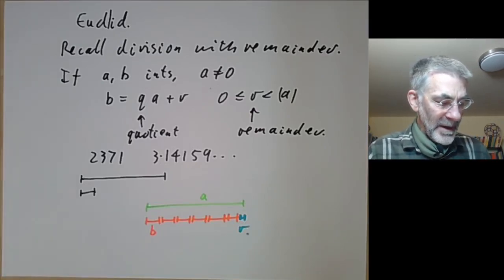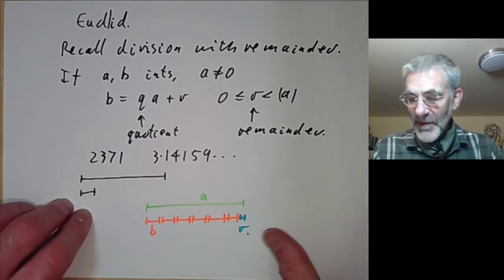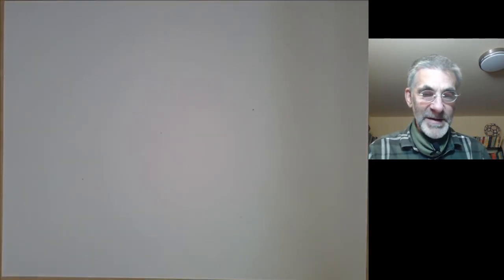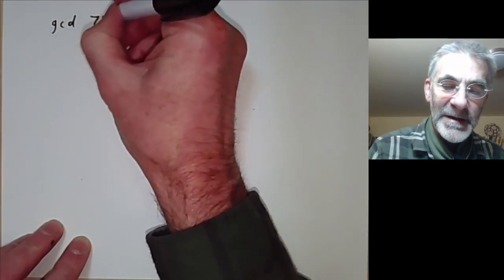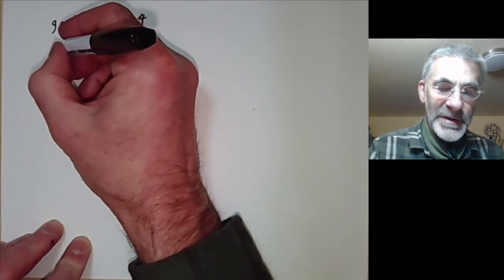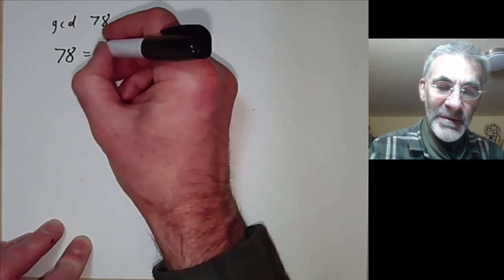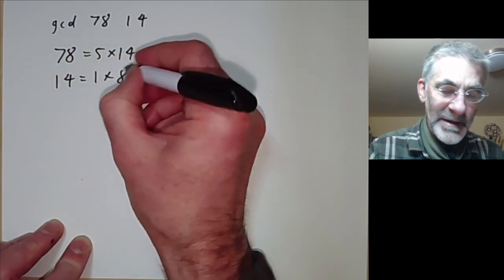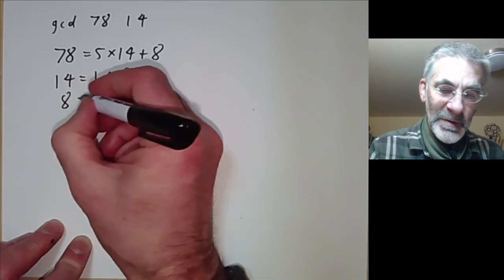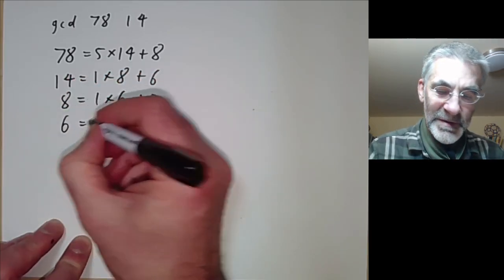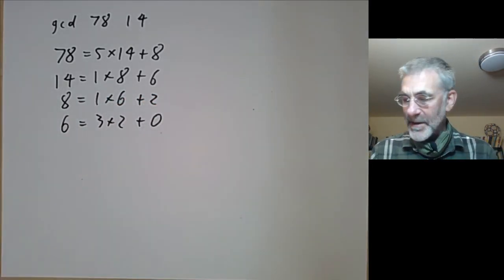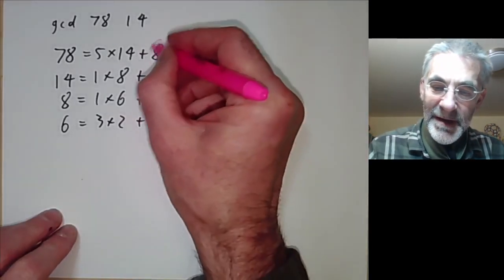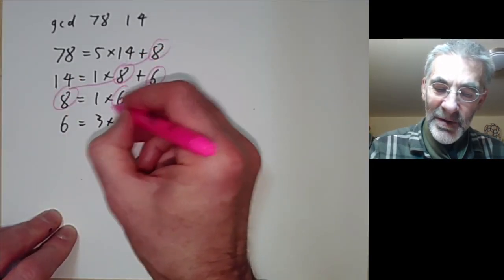Let's look at Euclid's algorithm. The easiest way to explain it is to do an example: find GCD(78, 14). You repeatedly divide with remainder: 78 = 5 × 14 + 8, then 14 = 1 × 8 + 6, then 8 = 1 × 6 + 2, then 6 = 3 × 2 + 0. What's happening is that the remainders get shifted along like this.